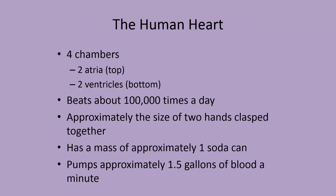The three components are heart, lungs, and vessels. The human heart has four chambers: two atria at the top and two ventricles at the bottom. It beats around 100,000 times a day. It's approximately the size of two hands clasped together — if you put your hands together where your right thumb overlaps your left thumb, that is basically the size. It has a mass of a full soda can, and it pumps approximately one and a half gallons of blood every minute. It is a very powerful engine for your blood.